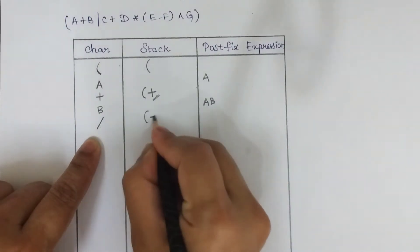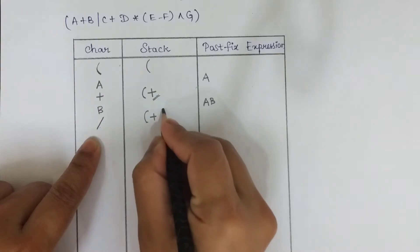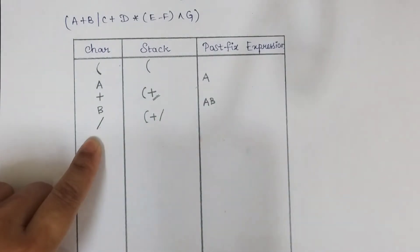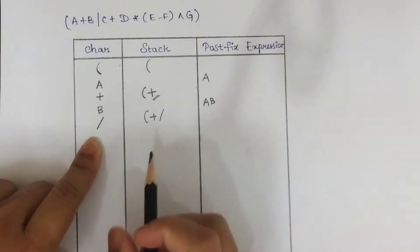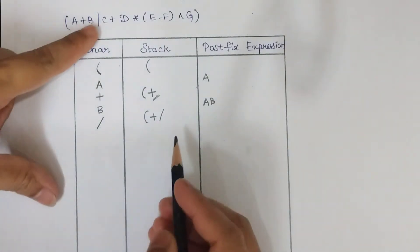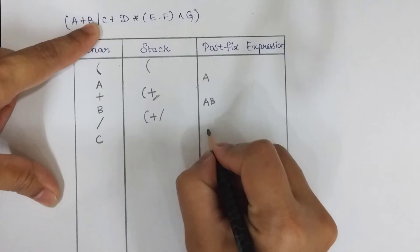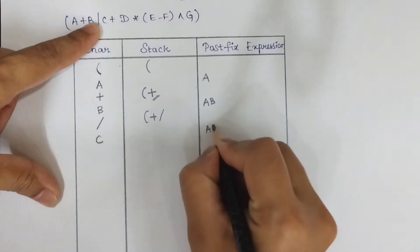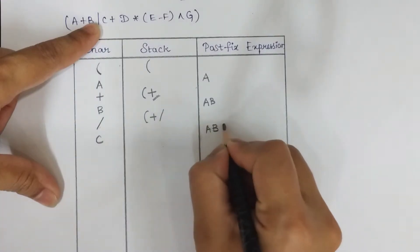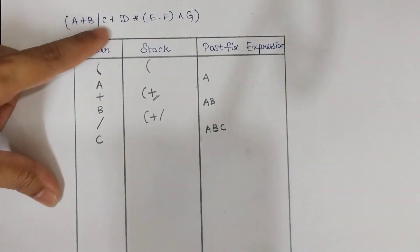If it has higher precedence, directly push it into the stack. The next character is 'C' — since it is an operand, we append it to the postfix expression.